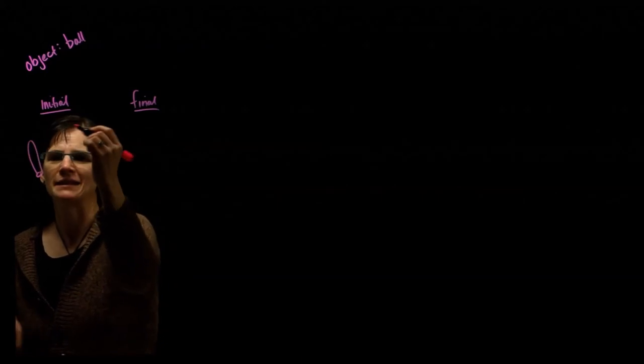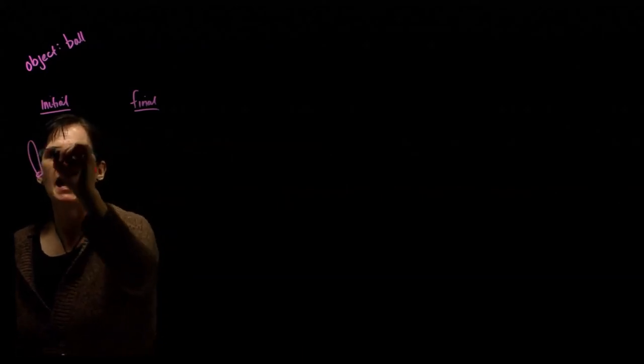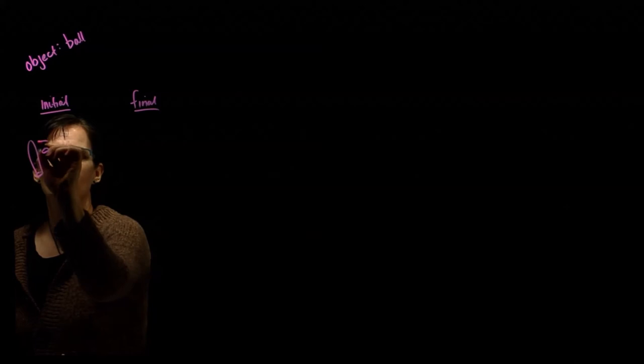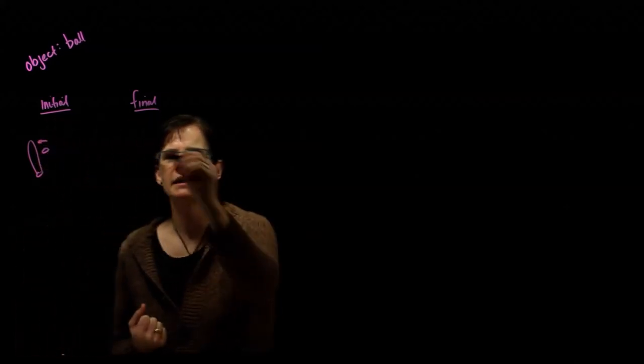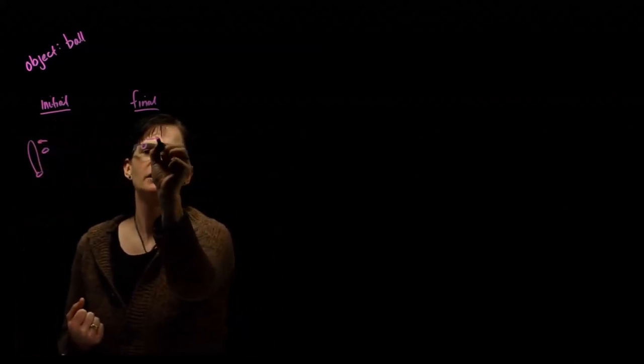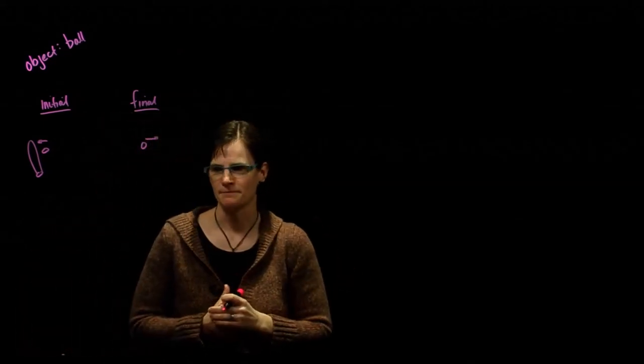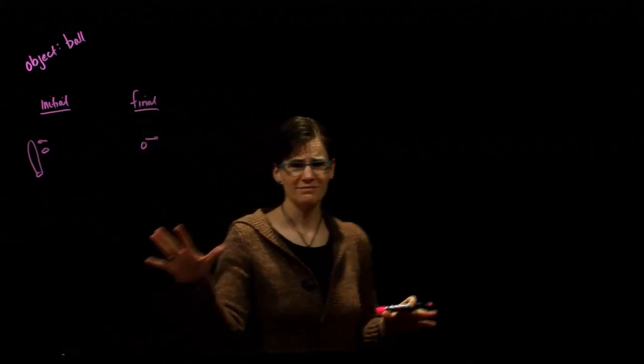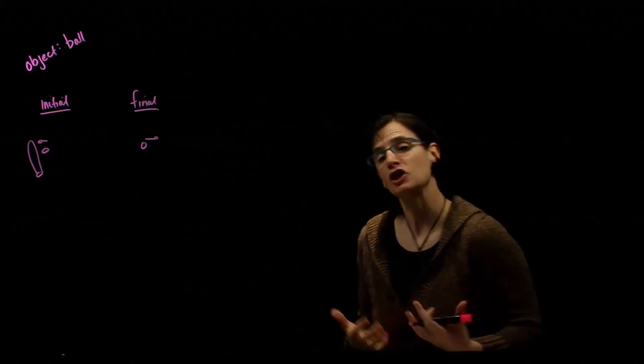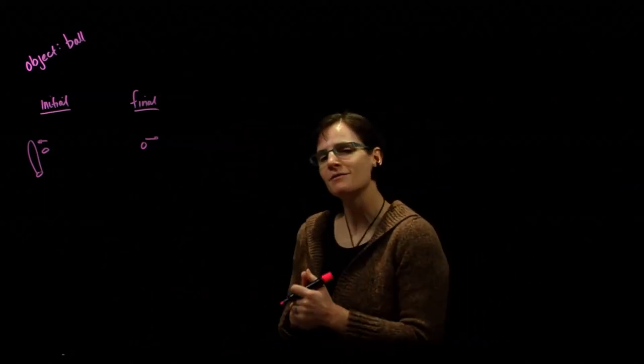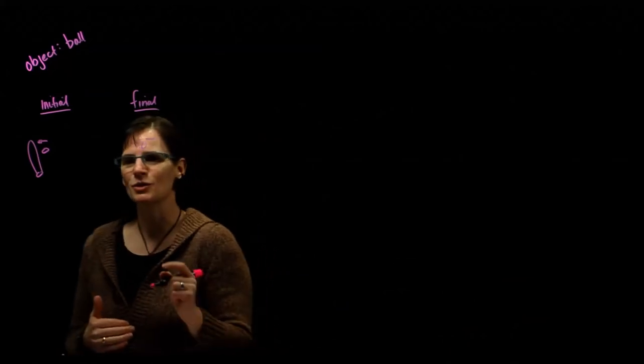There's our baseball bat, and we will have the ball coming into the baseball bat, and then after the ball leaves the baseball bat, we have our ball returning. So that's our initial and final condition, then we can look at the properties of momentum related to this object.